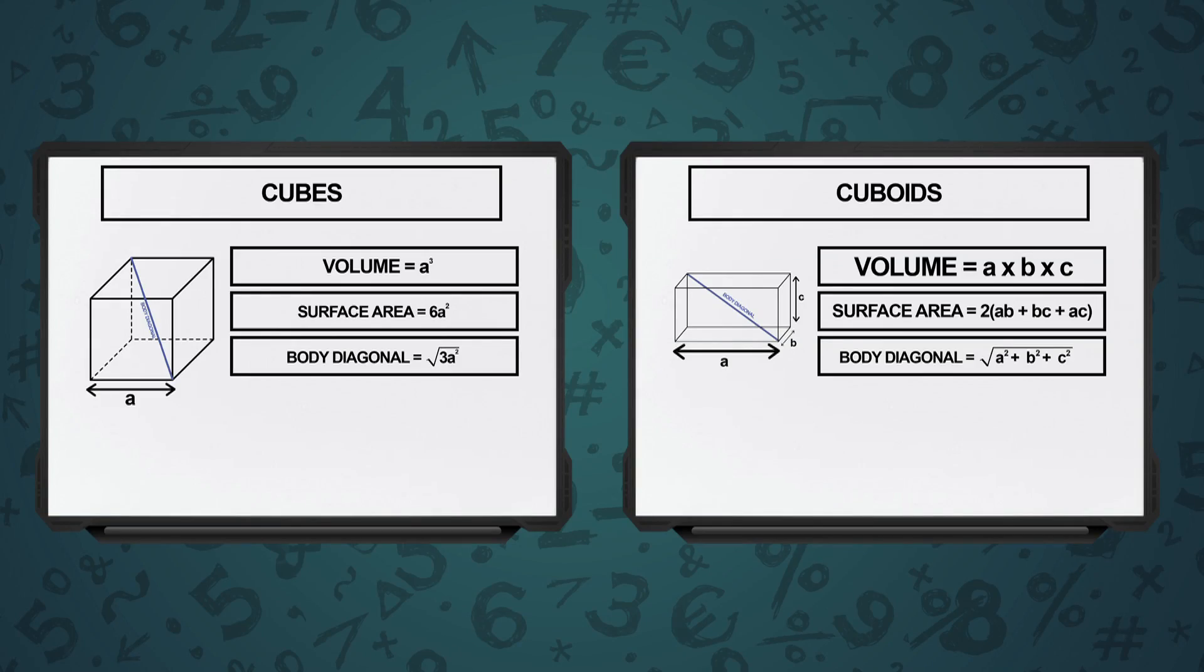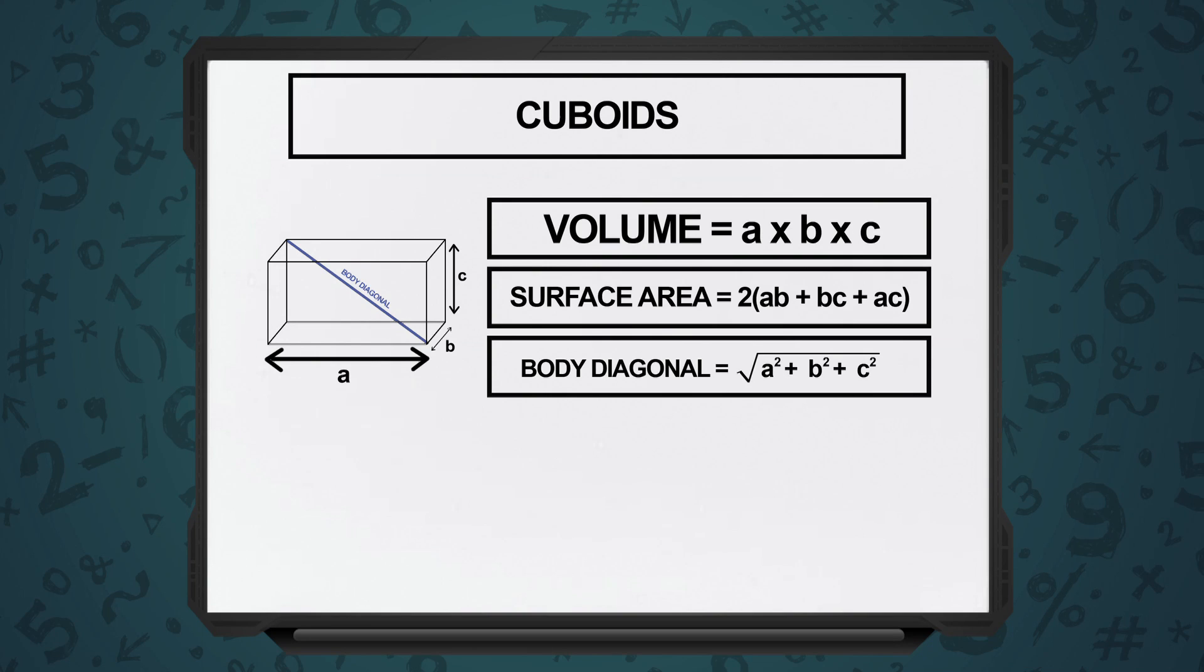If you look at the formulae between cube and cuboid, the cube formula basically comes from the cuboid formula. Instead of A, B and C, in a cube everything is A, whereas in a cuboid you have A, B and C coming separately. And then again, we would have a body diagonal concept over here, and the body diagonal of a cuboid is given by under root A square plus B square plus C square.